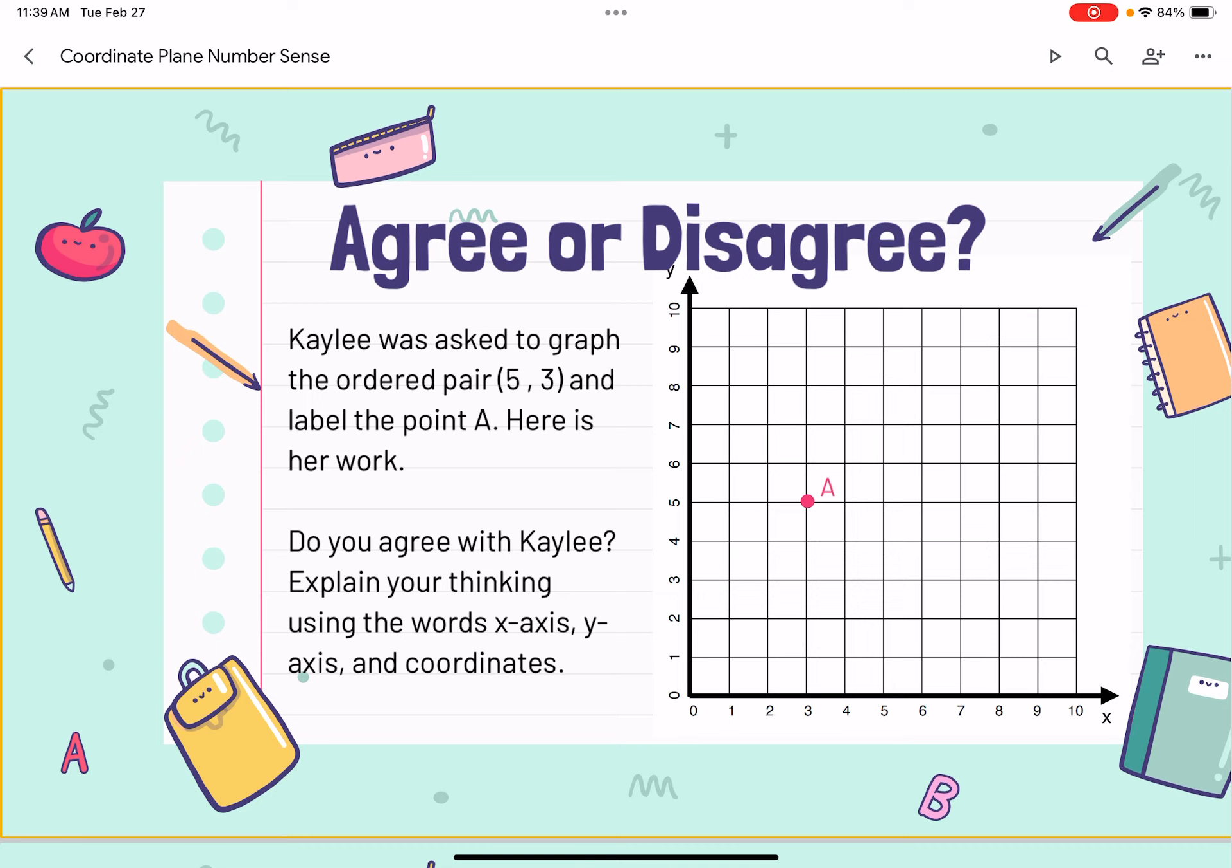I would disagree with Kaylee because she flipped her y-coordinates and her x-coordinates. She should have moved 5 units to the right along the x-axis and 3 units up along the y-axis.